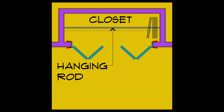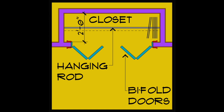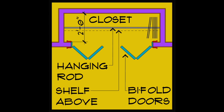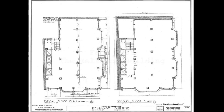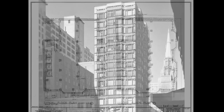A closet for hanging clothes should be a minimum of 24 inches in depth in order to accommodate a closet rod, shelf above, and clothing hangers, which are 16 to 18 inches wide.